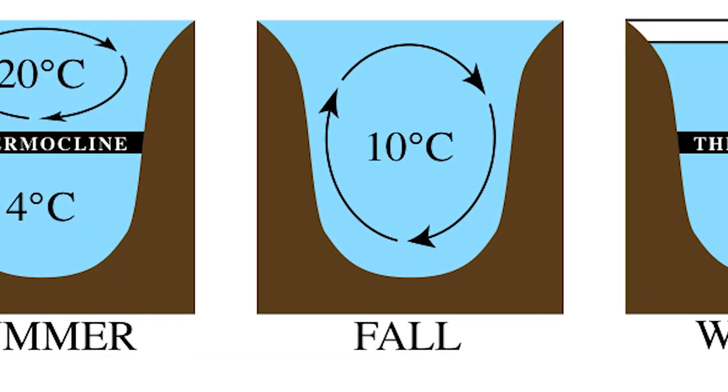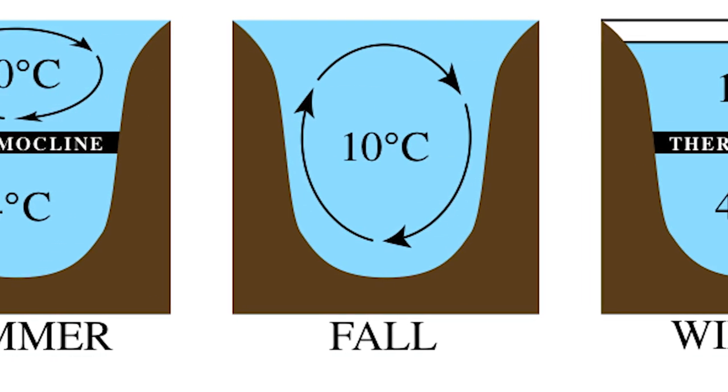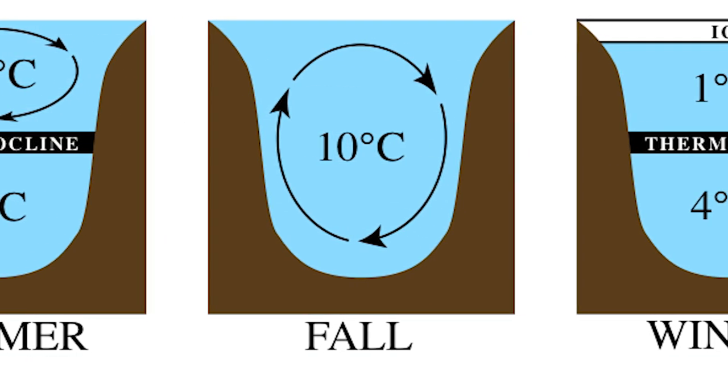Fall turnover occurs when the surface water begins to cool and sink, aided by strong fall winds, and the lake temperature becomes more uniform throughout.